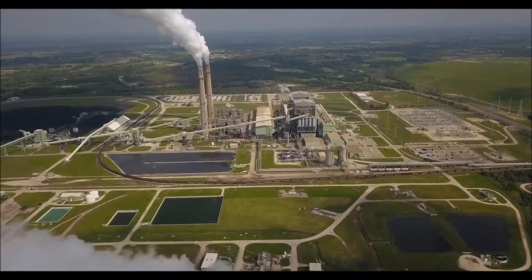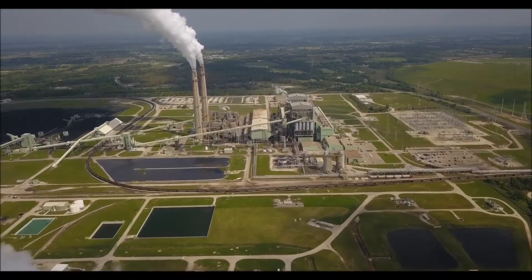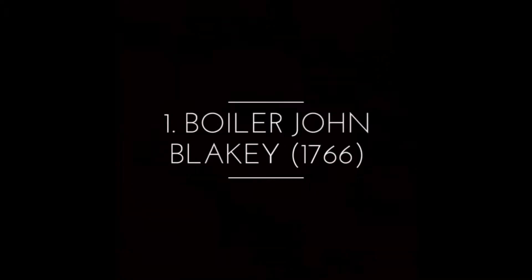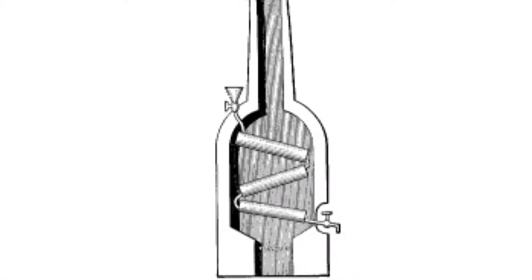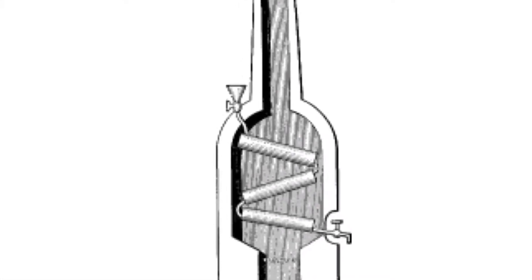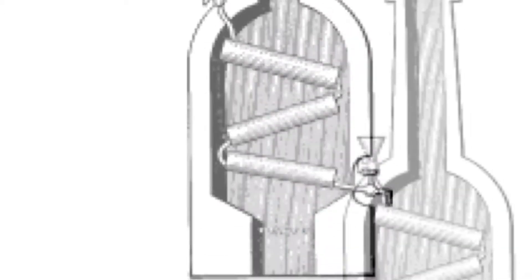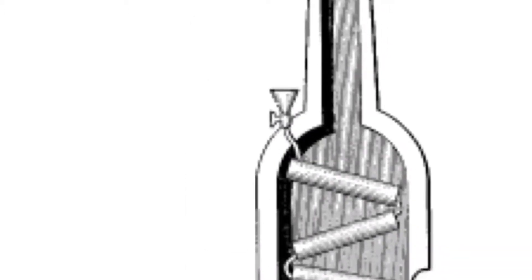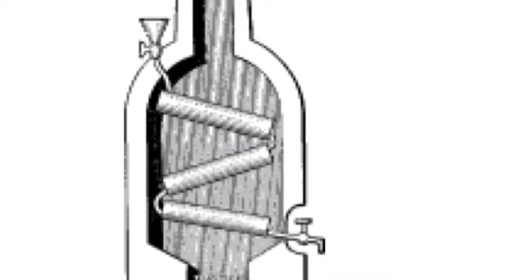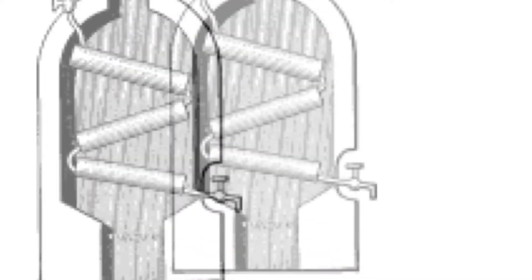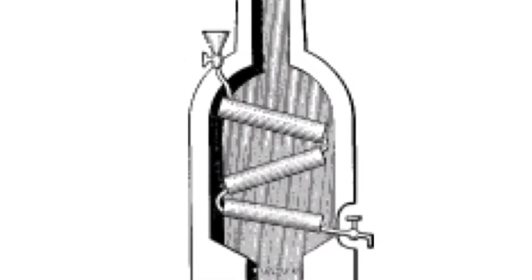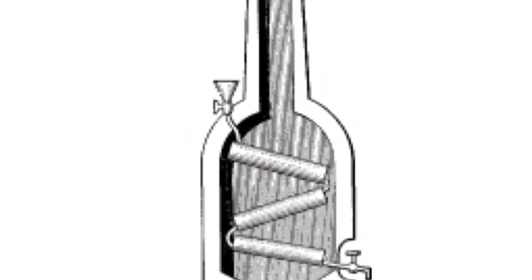Here are the different types of water tube boilers based on history and design. John Blakey Boiler, 1766: This boiler, designed by John Blakey, became the forerunner of the water tube boiler. It is composed of a vertical furnace with several connected pipes inside, tilted to form a certain angle, with the two ends of the pipe connected to a smaller pipe. It was patented by John Blakey in 1766 but was not very popular at the time.